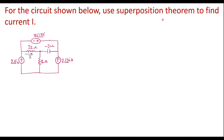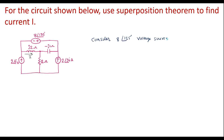As we know, in superposition theorem, at a time we are supposed to consider one source. So here we have 3 sources — consider one source at a time. So first I will consider the voltage source that is 8∠135°. I will open the 2 amp current source and the other 2 amp current source. Consider the 8∠135° voltage source alone.